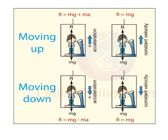In case of constant velocity, a will be 0 and R will be equal to m into g.